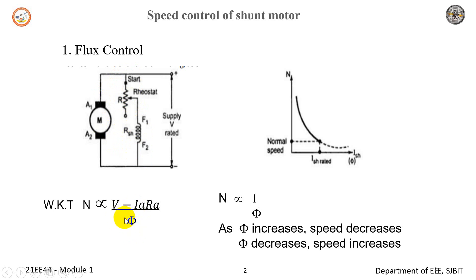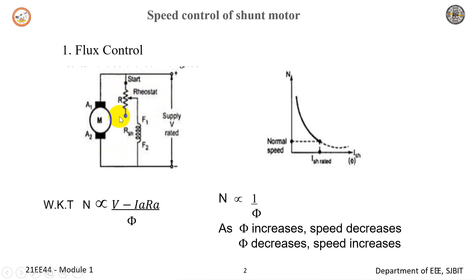Since the flux discussed here in the denominator is a field flux, if I vary this field flux — as n is inversely proportional to phi — if I increase phi speed should decrease and if I decrease phi speed should increase. To obtain this change in flux we need to change the current in the field winding. For a shunt motor, as long as the supply is constant, the current in the shunt field is also constant. Thereby, to vary the shunt current I need to insert an external resistance R to vary it.